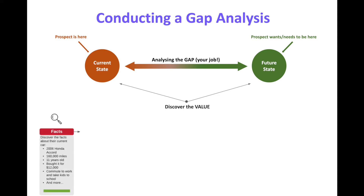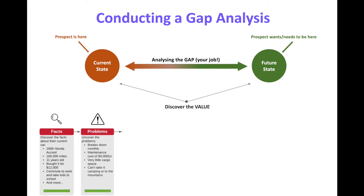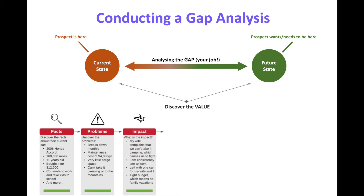This is where a lot of salespeople go wrong. They're very good at finding the facts — for example, a car: the prospect drives a Honda Accord, it's done 160,000 miles, it's 11 years old. These are the facts. Then they diagnose the problem: it breaks down, it has monthly maintenance, very little cargo space, and they can't take the family camping. What they don't do is talk about the impact of these problems.